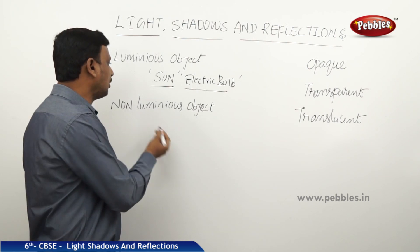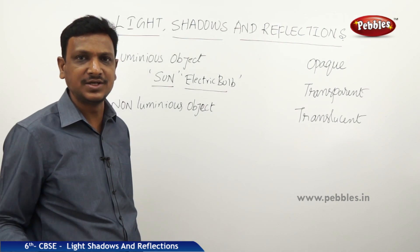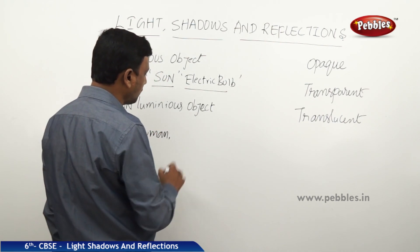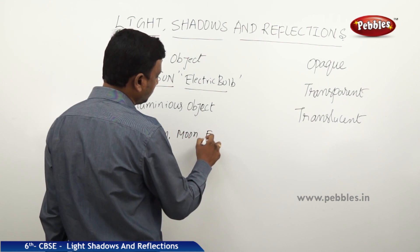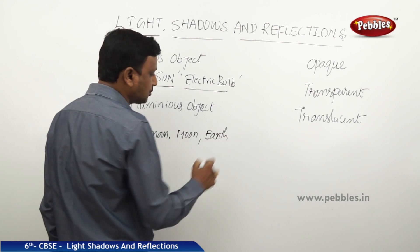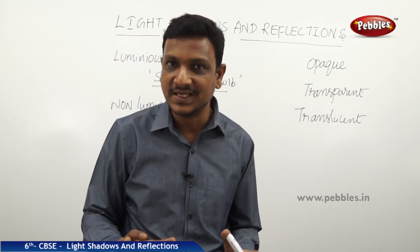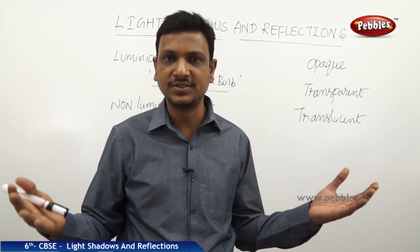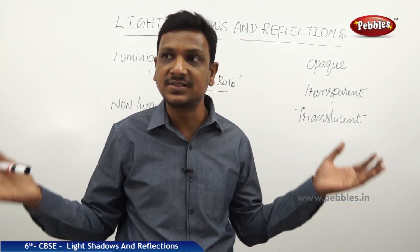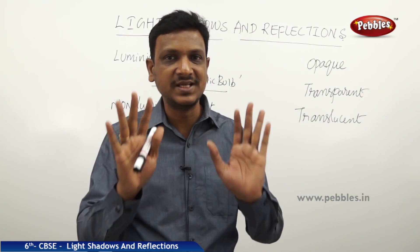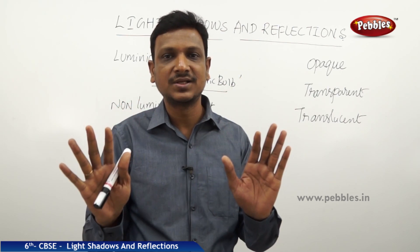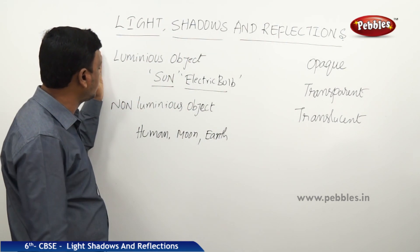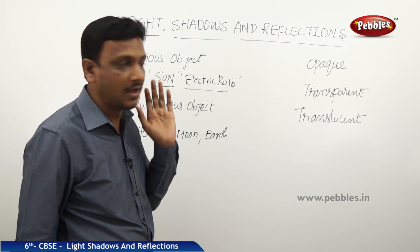So the moon is not a luminous object. The Sun and the electric bulb are examples of luminous bodies. Non-luminous bodies are objects that do not emit light on their own. Examples include humans, the moon, and the Earth. All these things do not produce light — they just reflect it. Garden plants, flowers, fruits, animals, birds — all these objects reflect light to your eyes, and so you can see them. Those are all non-luminous objects.